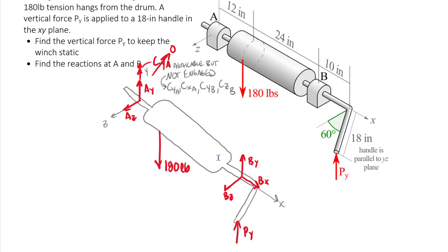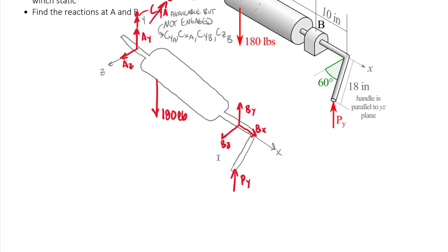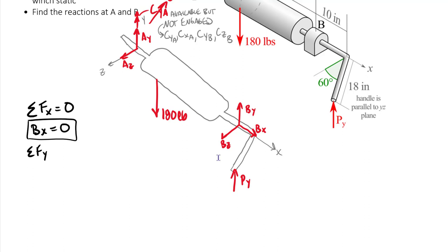Thinking about strategy: summing forces gives the same equations regardless of point chosen. Let's isolate each direction from the start. Sum of forces in x equals zero — the only x-direction force is Bx, so Bx equals zero. That was easy. Next, sum of forces in y equals zero: we have Ay plus By, minus 180, plus Py equals zero. We can't quite solve that yet — three unknowns.